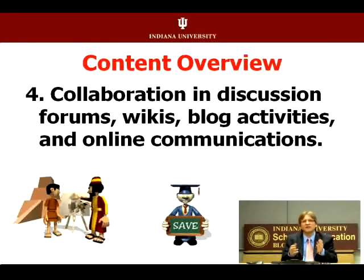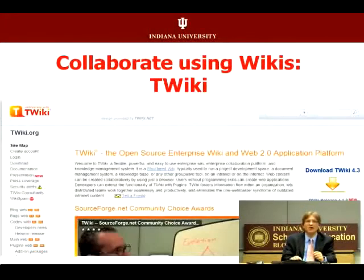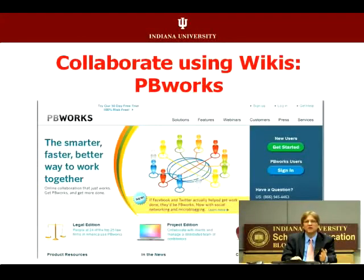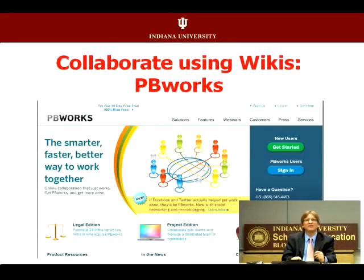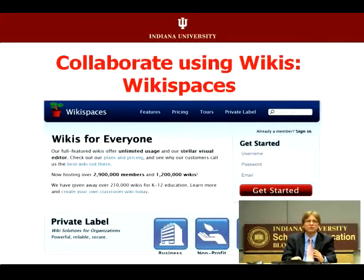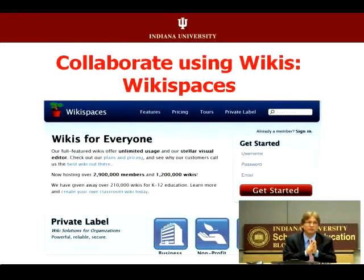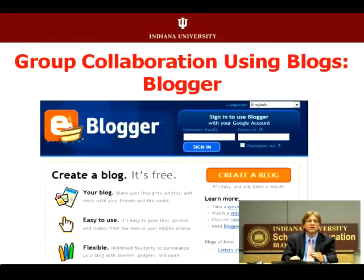Students today can use wikis like Twiki or PB Works, which used to be called PB Wiki — peanut butter wiki, as easy as peanut butter. Wet Paint is available if you're in the K-12 area. Wiki Spaces is an interesting and easy tool which a lot of people use for business, non-profit, K-12, higher ed, and across. Millions of people now have wikis in these spaces, and classrooms can have students doing interesting teaming activities and sharing activities — putting stuff in the wikis.